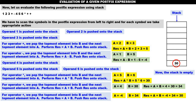The operation is very simple. Whenever you get an operand, push it onto the stack. Whenever you get an operator, pop the topmost element into B, next topmost element into A, perform RES = A operator B, and push RES onto the stack. If you remember this, the operation is very simple.